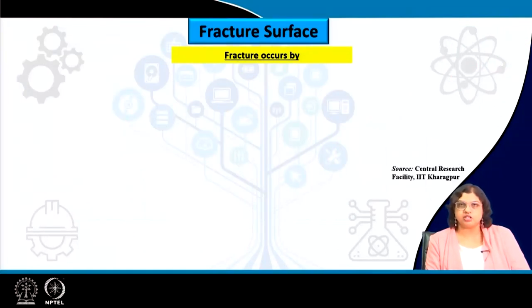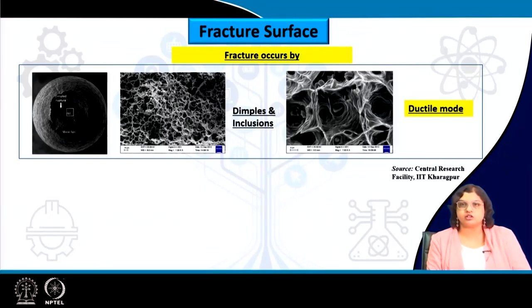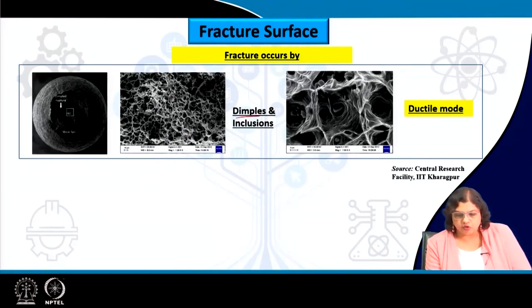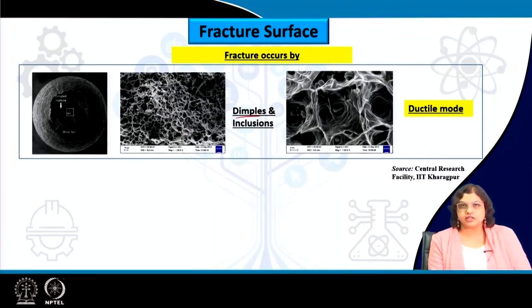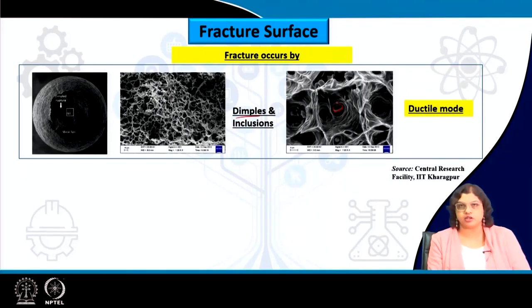For most materials fracture occurs by either of two methods. In the ductile case, apart from the shear lip, the signature of ductile failure when viewed under a scanning electron microscope is the presence of dimples — spherical or semi-spherical void-like features. Within the dimples we can also see inclusions, which are actually the reason for failure; it mostly occurs by micro void coalescence.